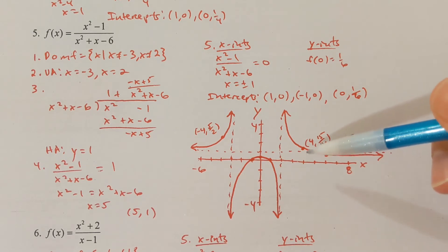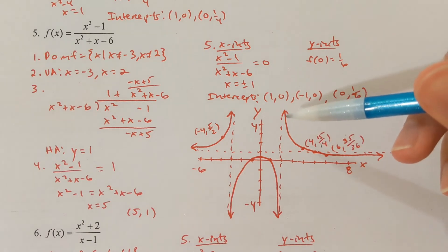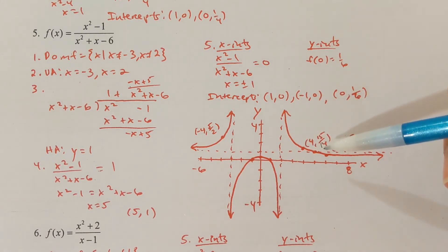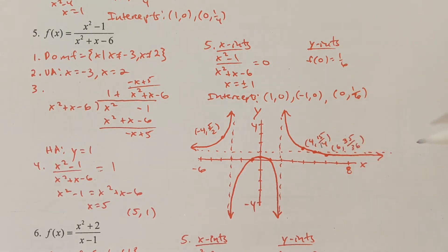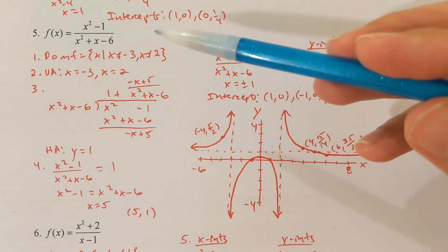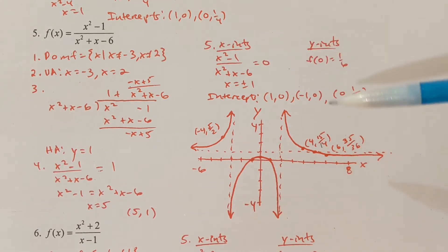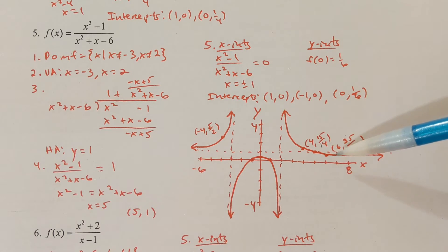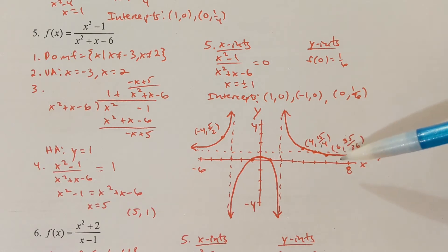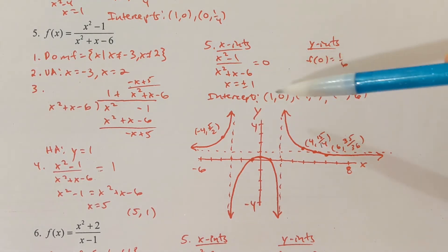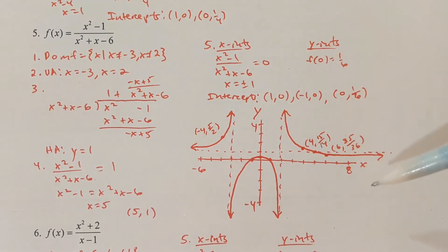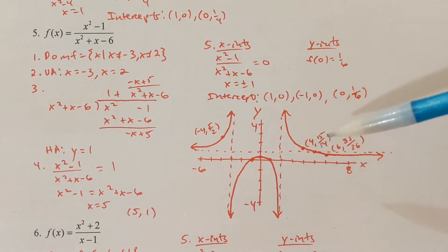The point (4, 15/14) is just barely above 1. To confirm whether the graph crosses through the asymptote rather than just touching it, plug in x equals 6: 6 squared is 36 minus 1 is 35, divided by 36 plus 6 minus 6 is 36, giving 35/36 — just barely below 1. So the graph actually crosses through y equals 1 and gets closer and closer to the asymptote. That's the graph of f of x.